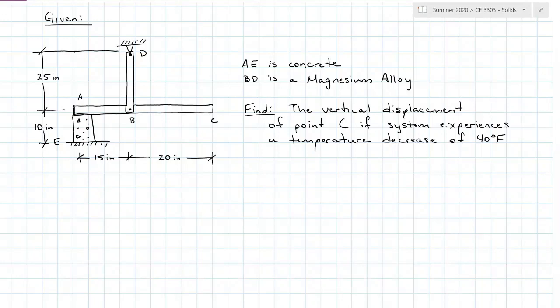If I draw a greatly exaggerated picture here, DB is going to shrink, AE is going to shrink, so ABC is going to rotate. This is the vertical displacement at C that I'm looking for.